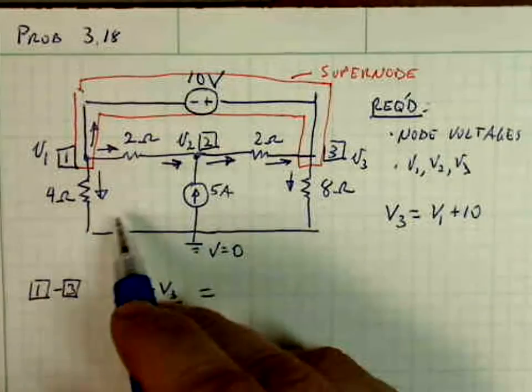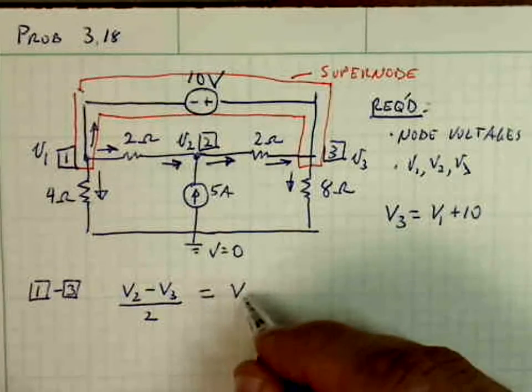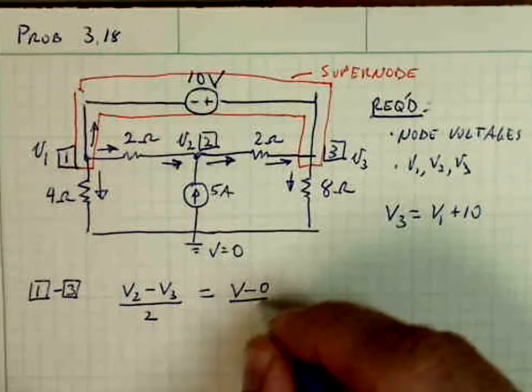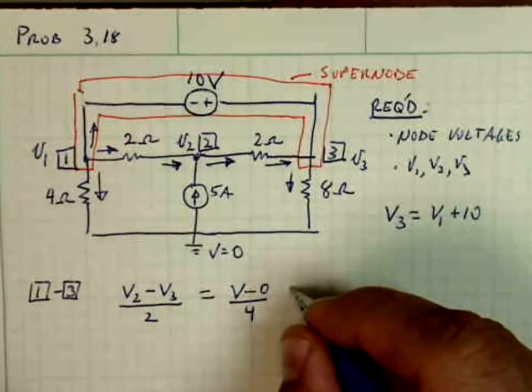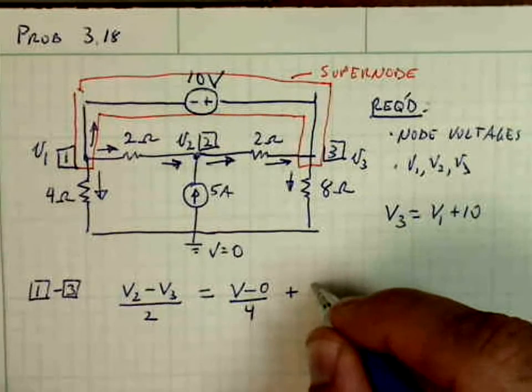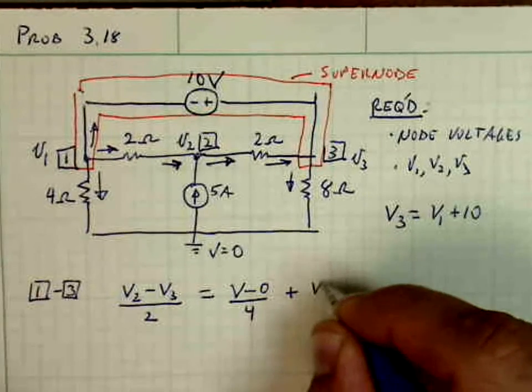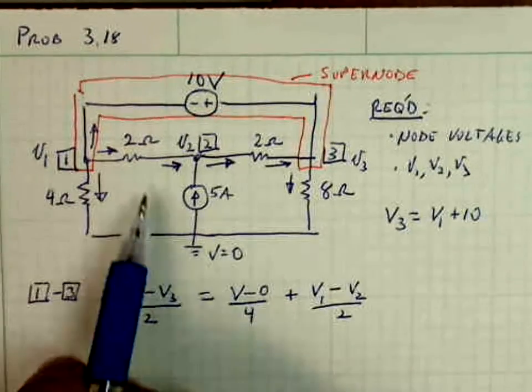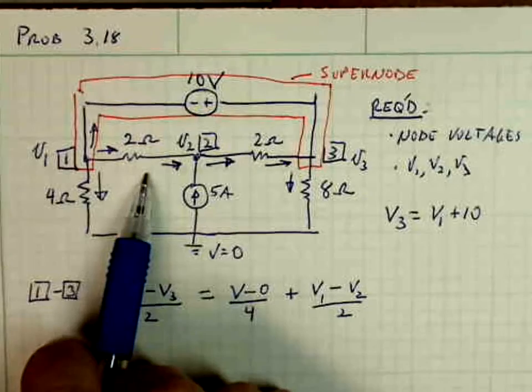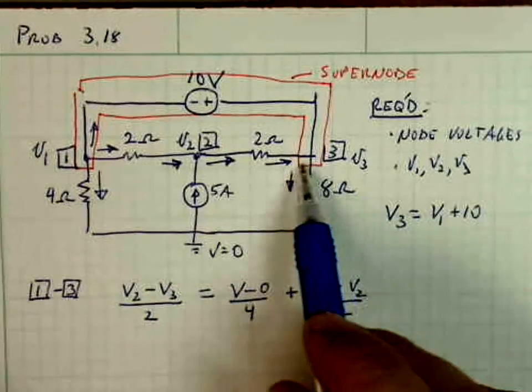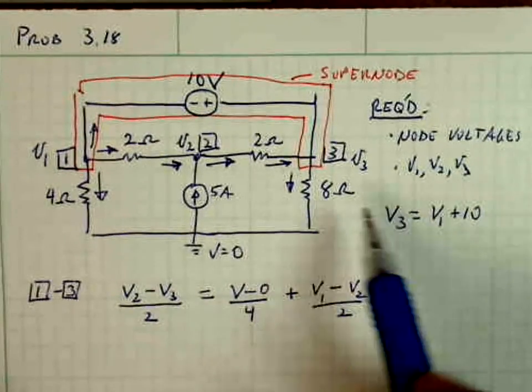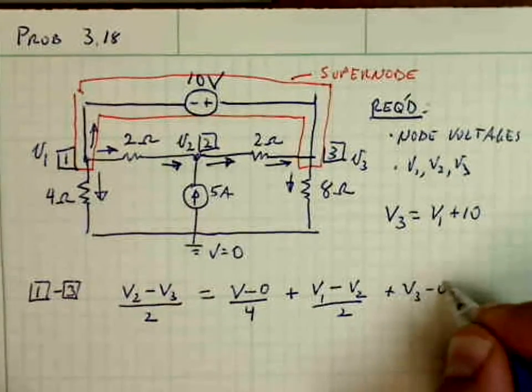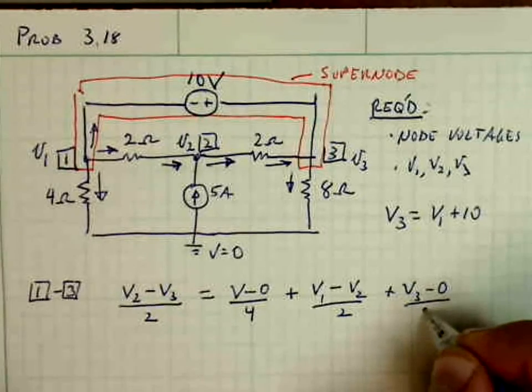So over the 4 ohm, it's V1 minus 0, where the reference node is, over 4, plus V1 minus V2 over 2, which represents the current through this 2 ohm resistor, and then we also have the current through the 8 ohm resistor. So that's plus V3 minus 0 over 8.